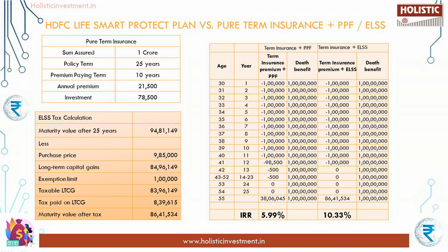For comparison, all metrics like sum assured and policy term are assumed similar. The annual premium is 1 lakh. A pure term insurance for a sum assured of 1 crore would cost ₹21,500, with a policy term of 25 years and premium paying term of 10 years. The balance amount of ₹78,500 could be utilized for investment. In the last two years (since the term premium paying term is shorter), the full 1 lakh could be used for investment. We have chosen one risk-free investment — PPF — and one high-risk instrument — ELSS — for comparison.